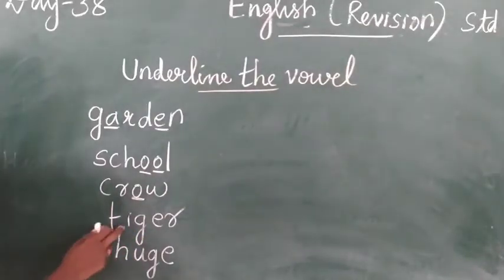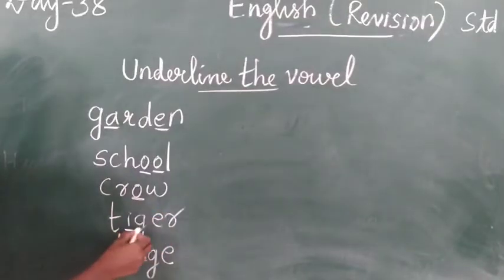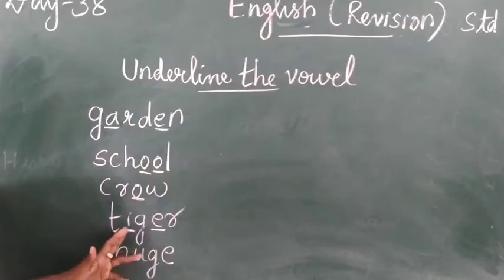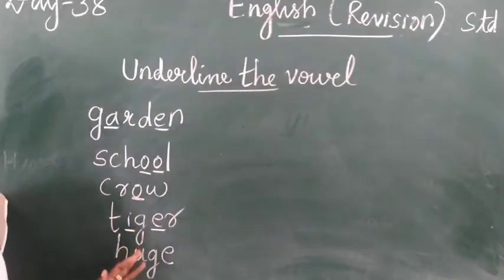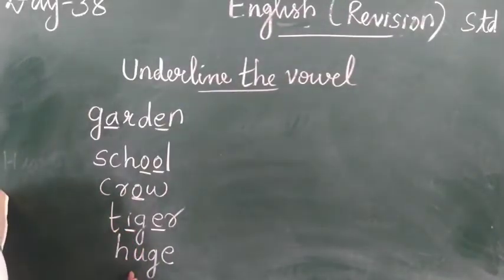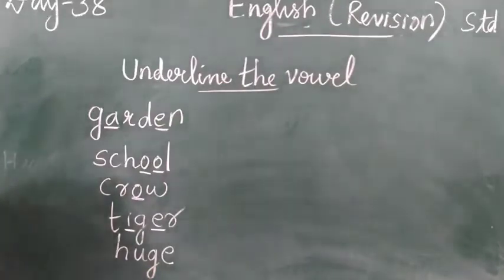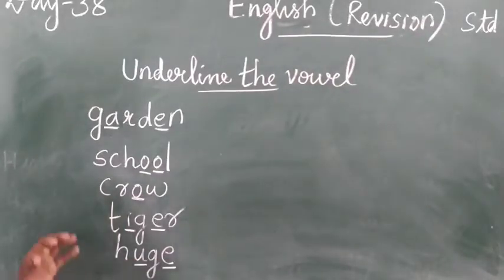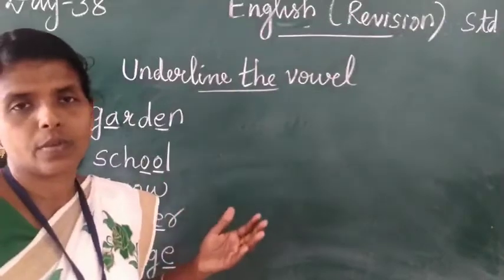Next, tiger: T-I-G-E-R. I and E are vowels. The remaining letters are consonants. Next is huge: H-U-G-E. U and E are vowels.